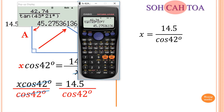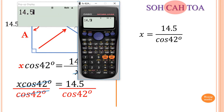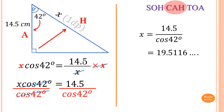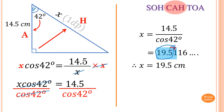Now I put that in the calculator: 14.5 divided by cos of 42 degrees, close brackets. The answer needs to be rounded to one decimal place. I get 19.5 — the digit after 5 is less than 5, so the answer remains 19.5 centimeters.